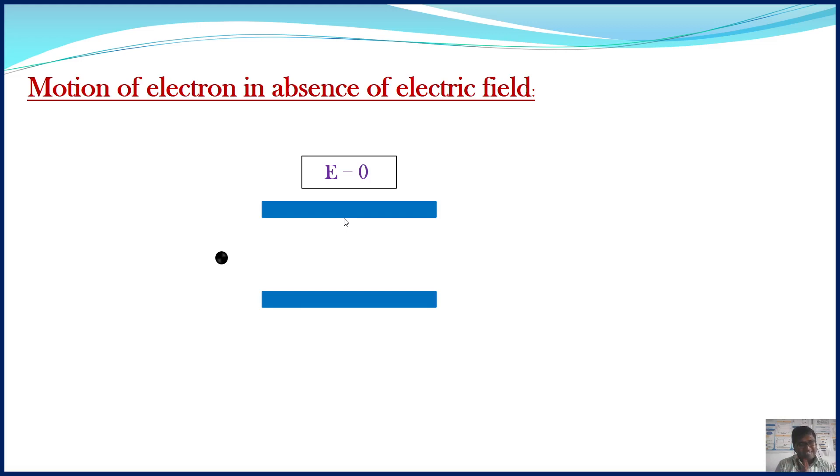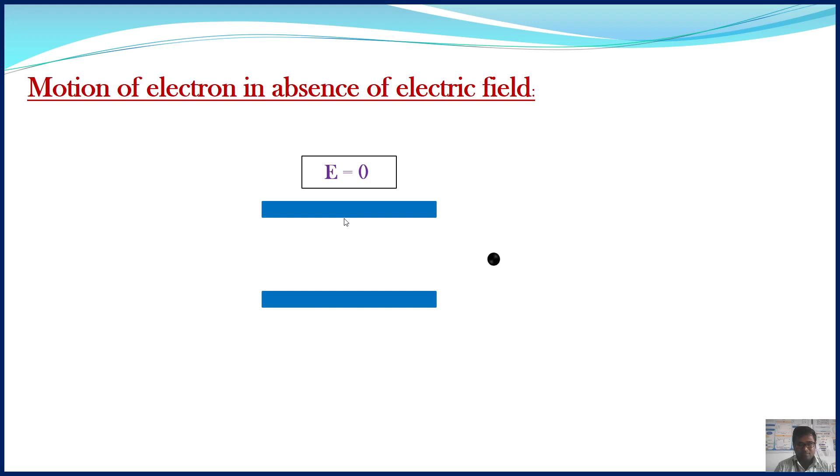Now, electric field is zero, which means the force acting on the electron will be zero. If the force is zero, then acceleration should be zero. If the acceleration is zero, there would be no change in the velocity of the electron. That means the electron will follow a straight-line path. Thank you.